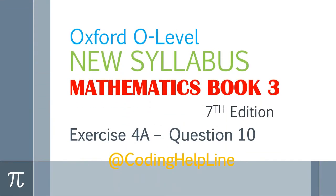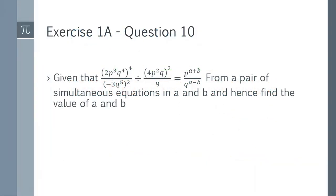Hello guys, welcome to my channel. This is question 10, the last question of exercise 4a — an advanced question from mathematics book 3, 7th edition. We are given two index expressions equal to a given term and need to form a pair of simultaneous equations in a and b, then find the values of a and b.